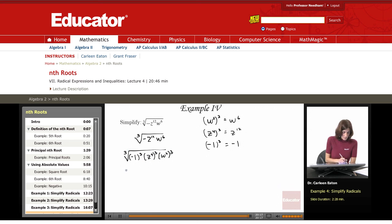And I'm going to end up with negative 1 times z to the 4th times w squared or just negative z to the 4th w squared.